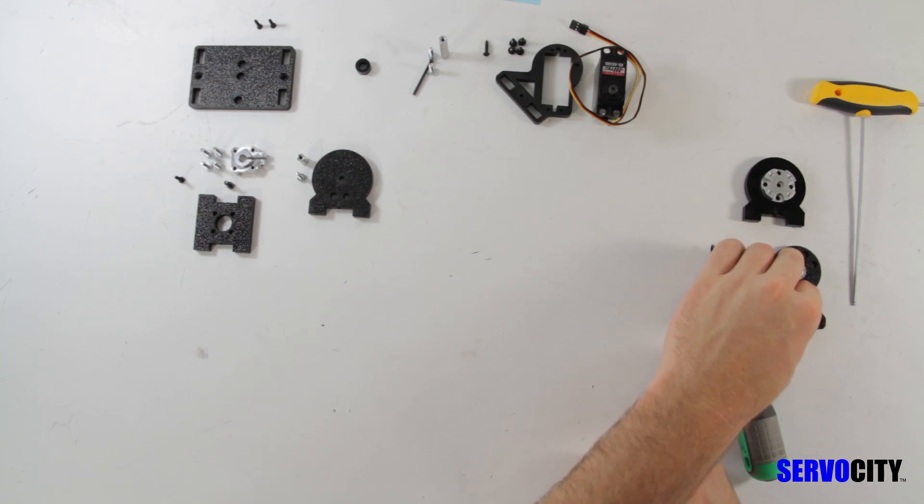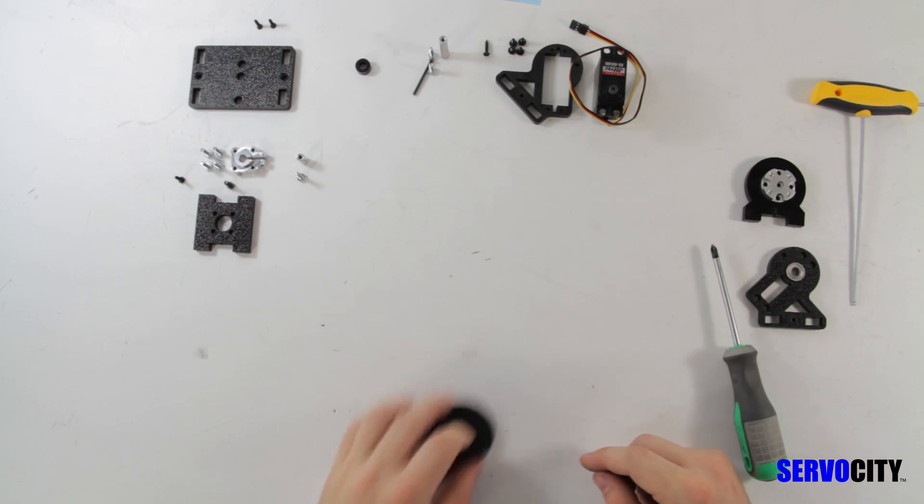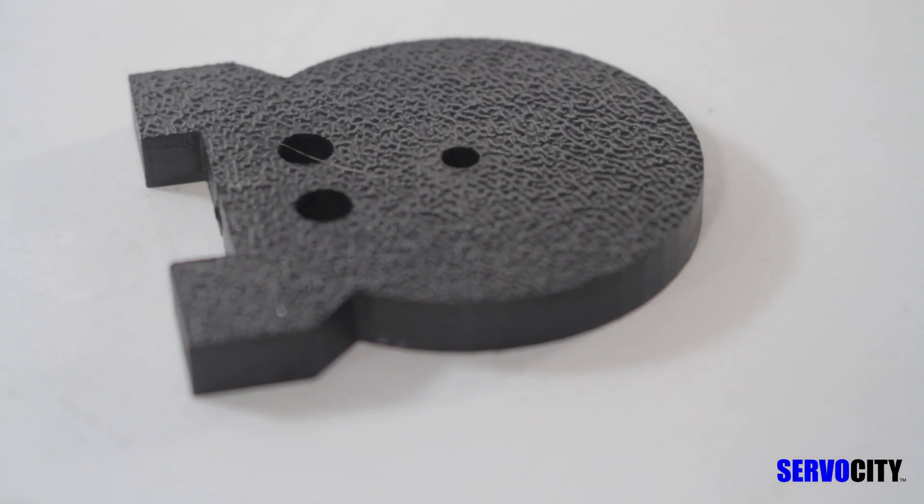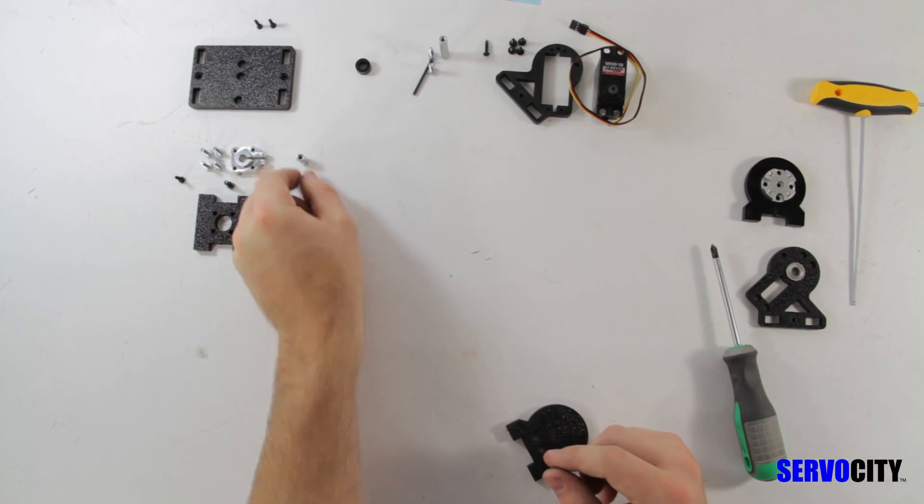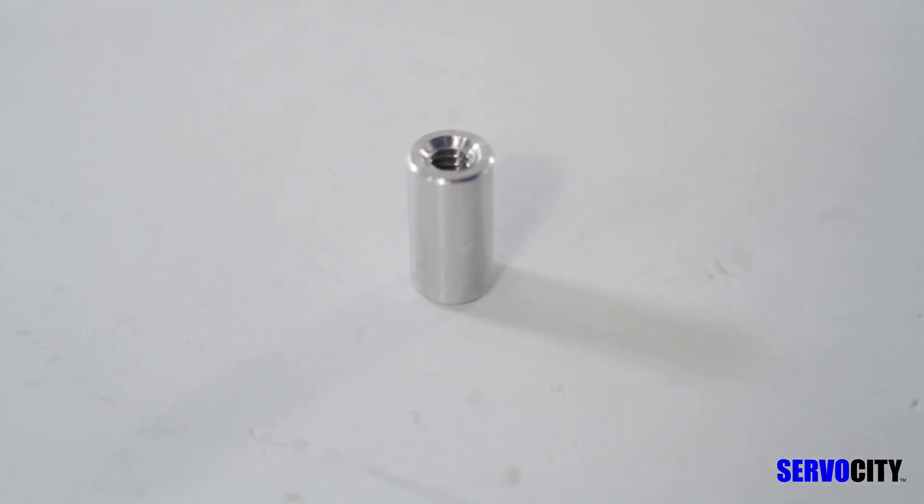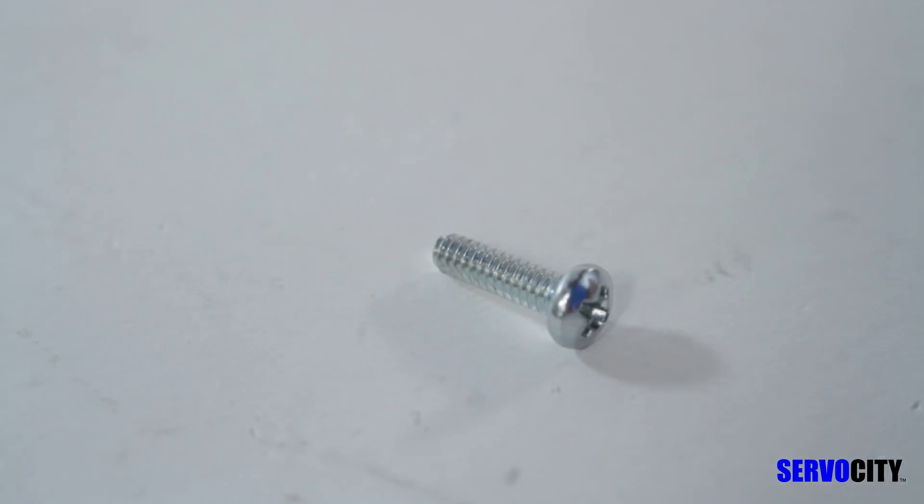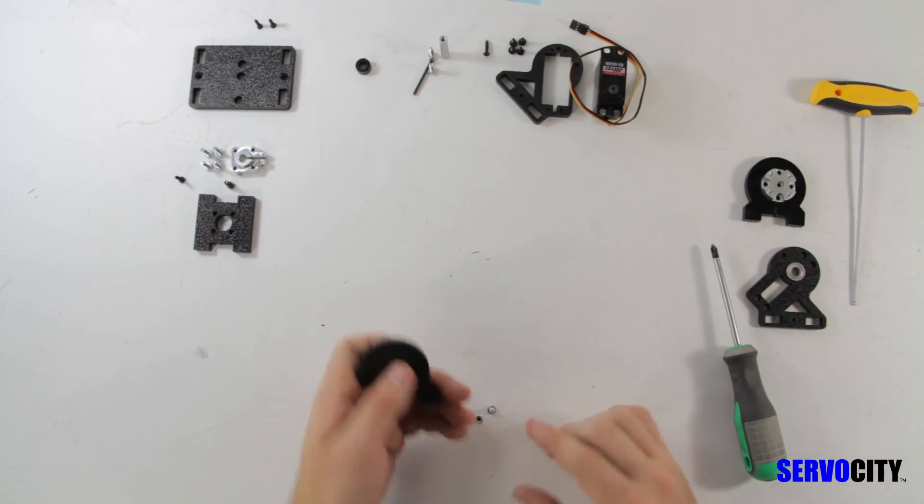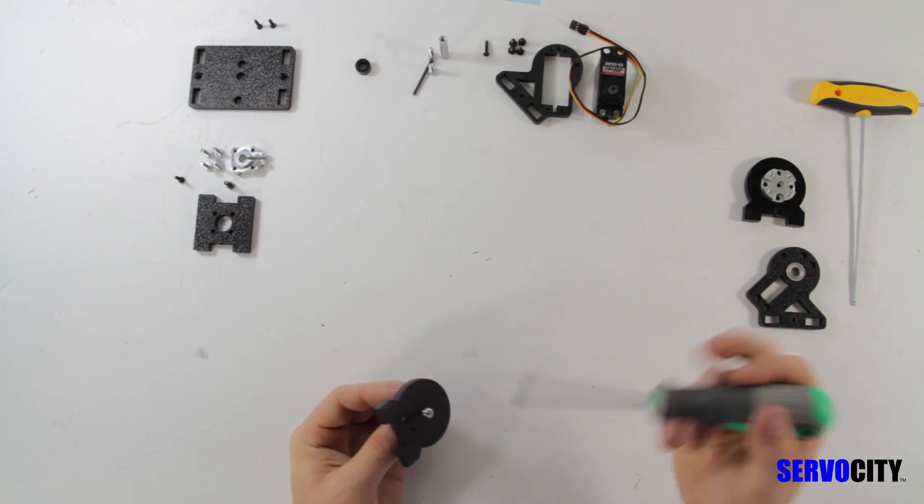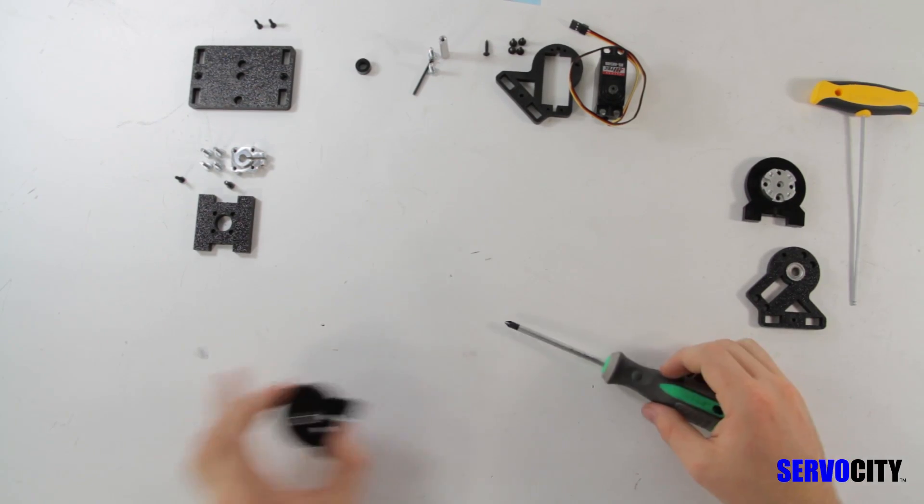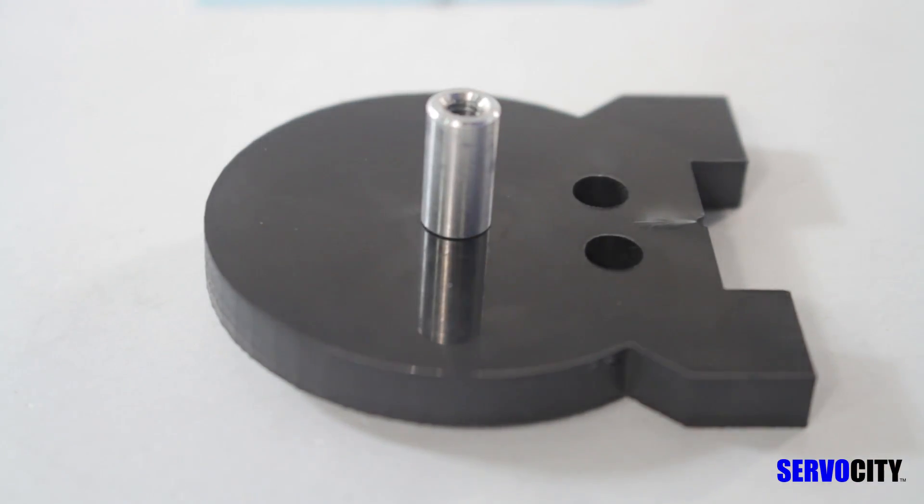When you have that finished, grab the second circular ABS plate, the one with the smaller hole in it, the 1.5 inch aluminum standoff and a 6-32 by 1/2 inch pan head screw. Fasten the aluminum standoff to the smooth side of this ABS plate using the pan head screw.